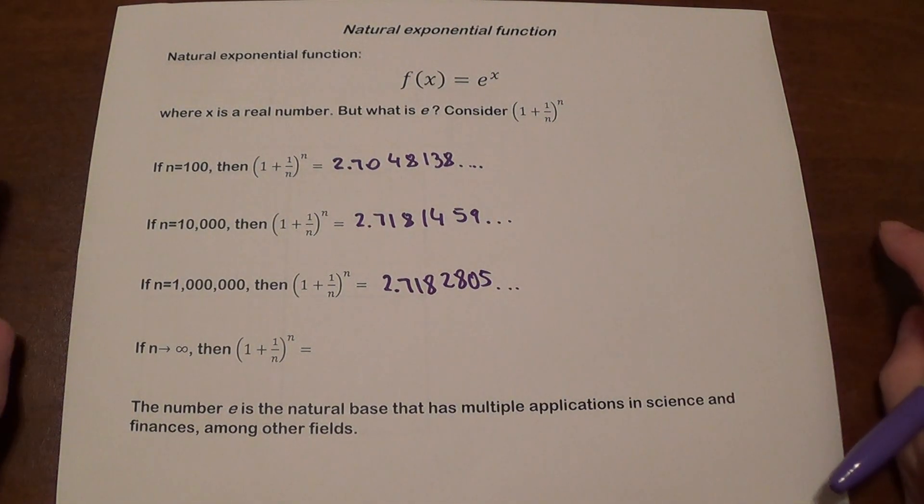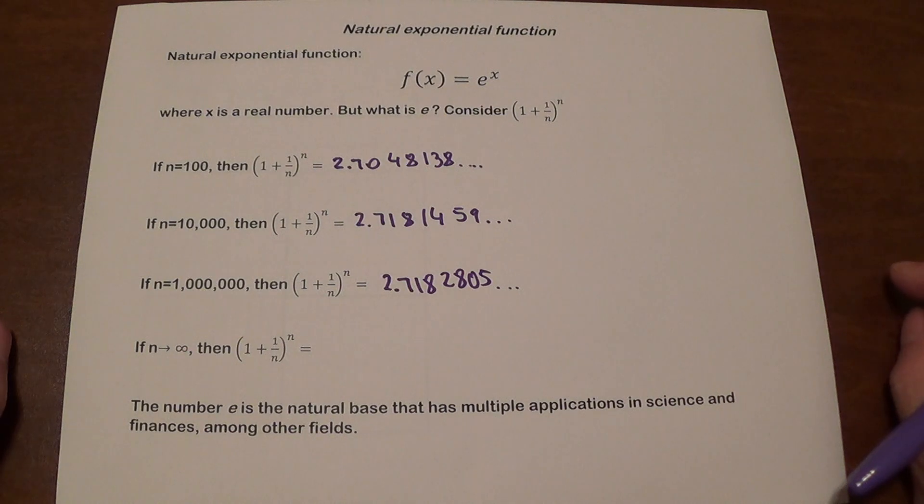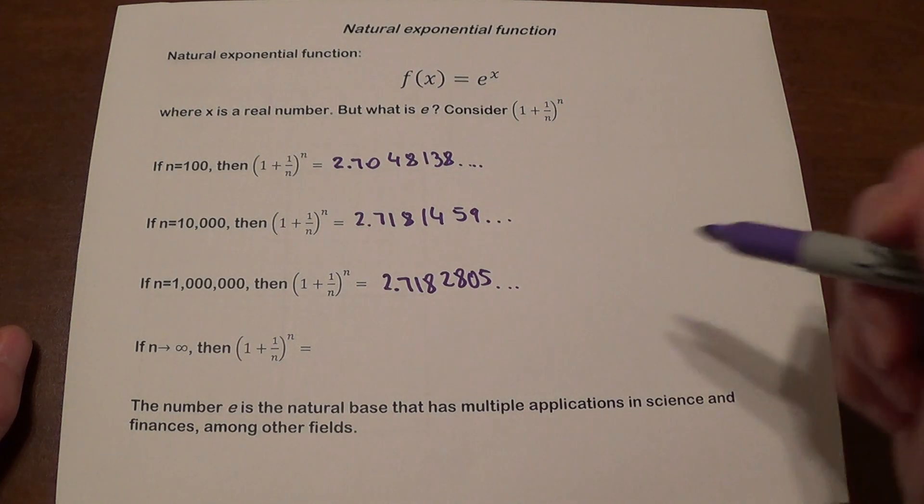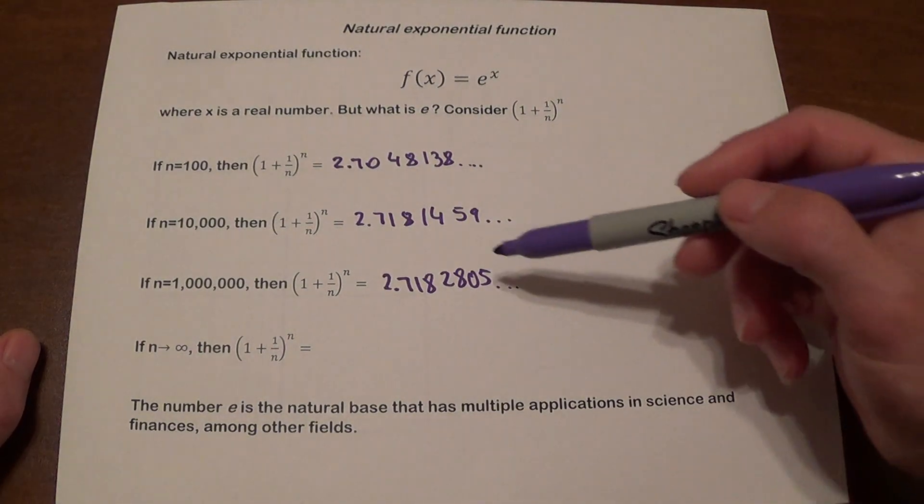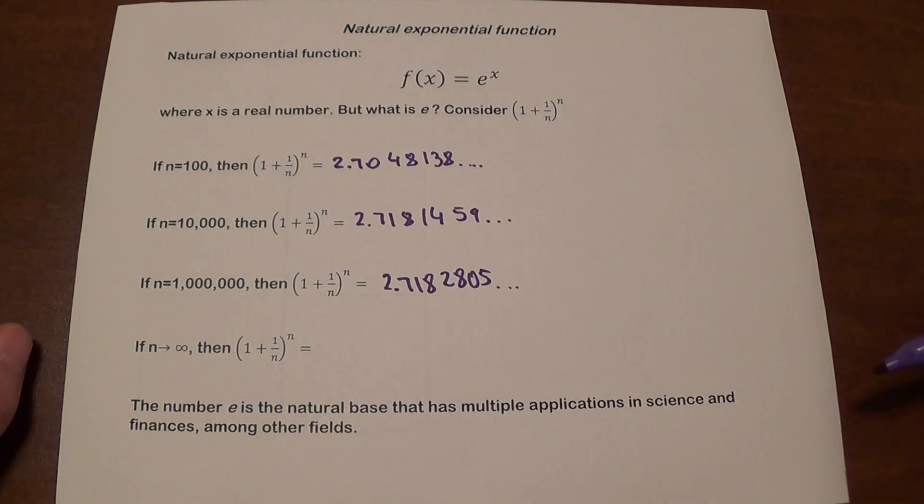So you can probably notice that this number is not changing much anymore. This number is definitely growing, but not by a lot, and even though I jumped from ten thousand to a million, my number grew very little. My change occurred in the fourth decimal place.